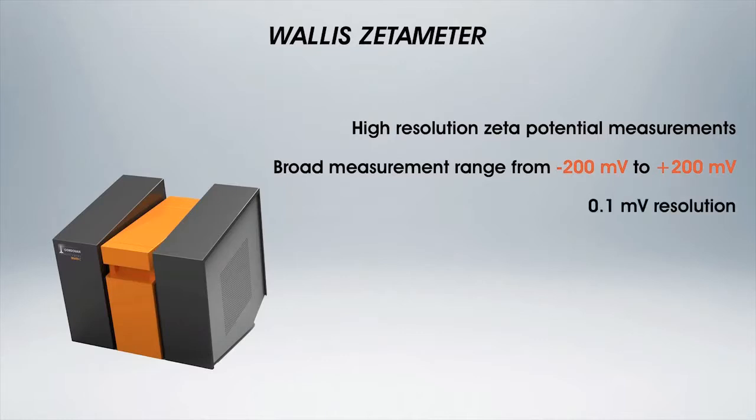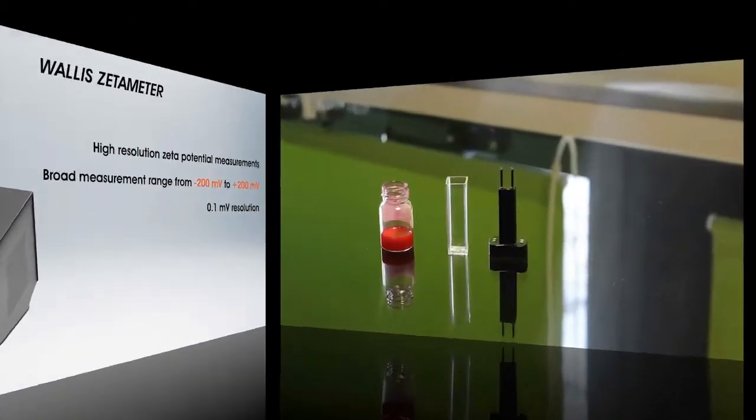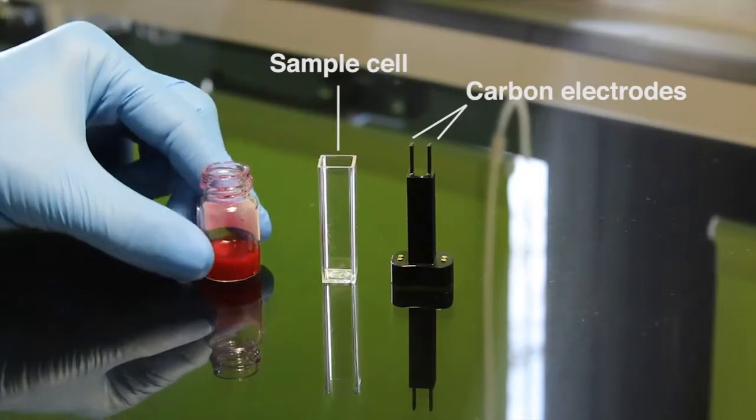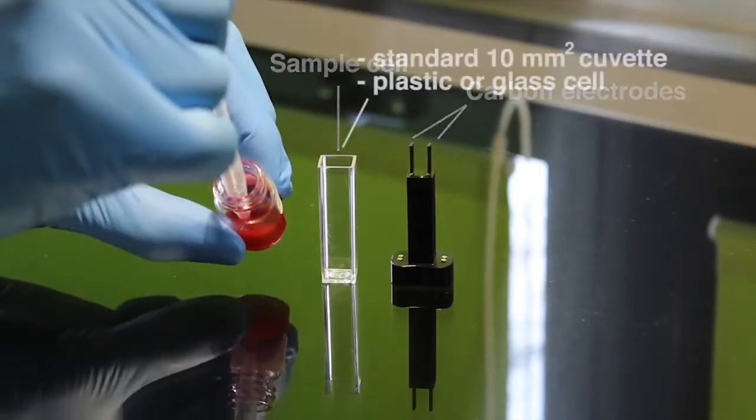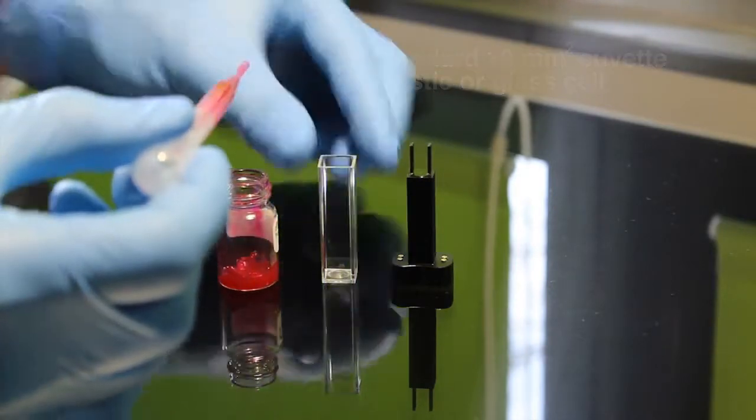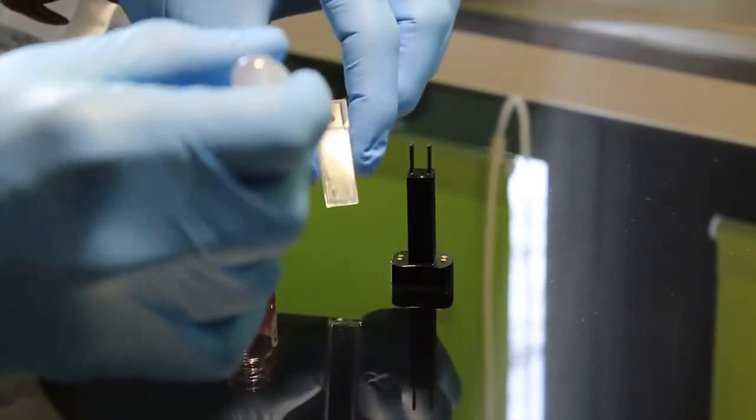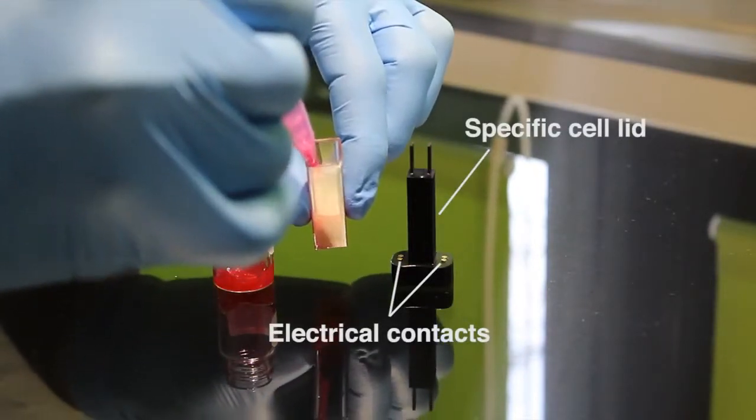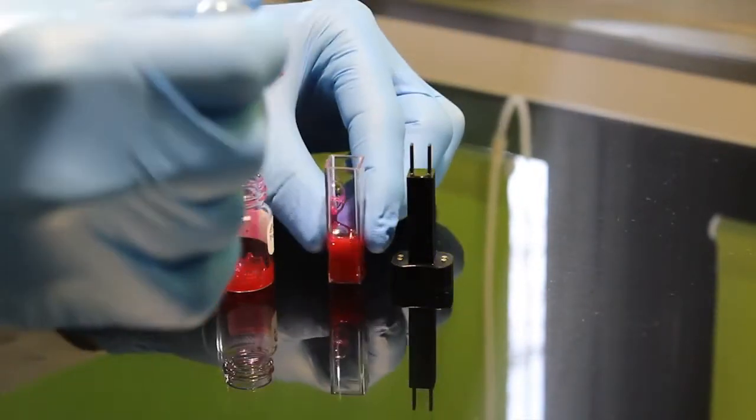One key part of Wallace is its measurement cell based on a dip cell design combined with high durability amorphous carbon electrodes. The sample cell is a standard 10 millimeter square cuvette, plastic or glass depending on the solvent. The electrodes are mounted on a specific cell lid with electrical contacts in order to apply an electric field in between when immersed in the cell.